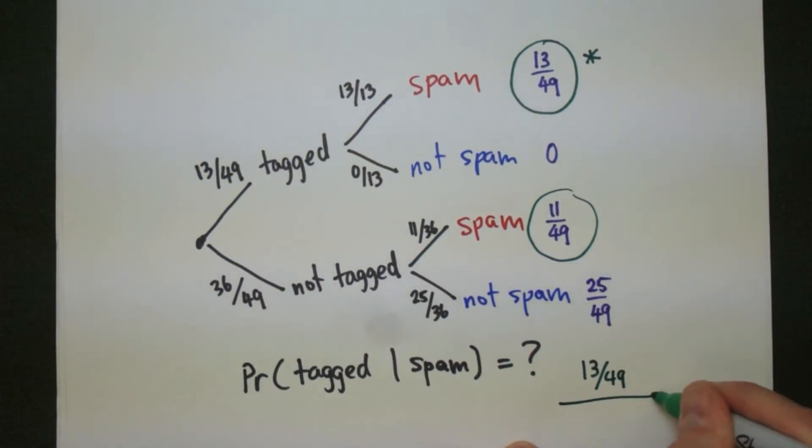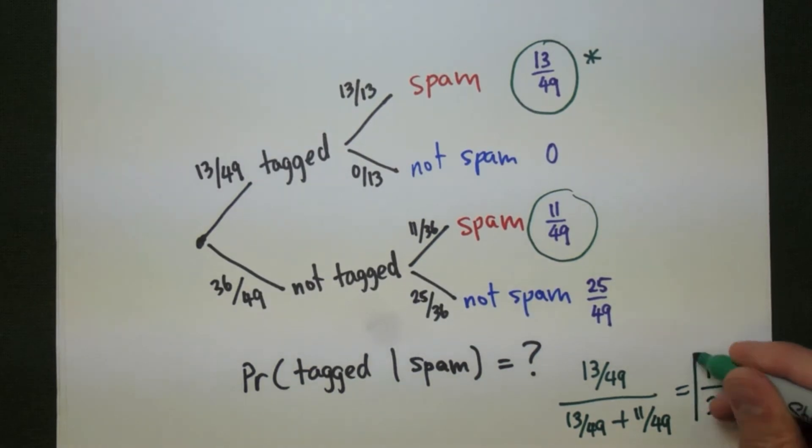So I'm looking at 13 over 49 divided by the two parts of the sample space together, 13/49 plus 11/49. Multiply everything out, and we end up with 13/24, and that will be our probability.